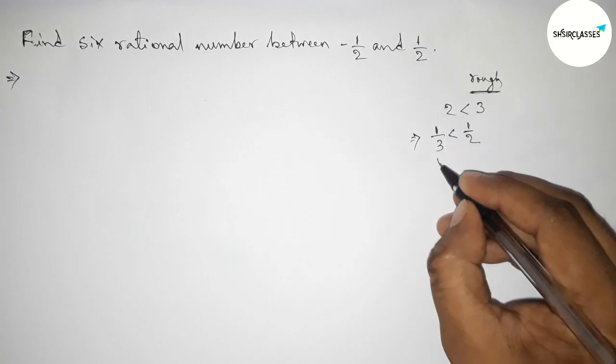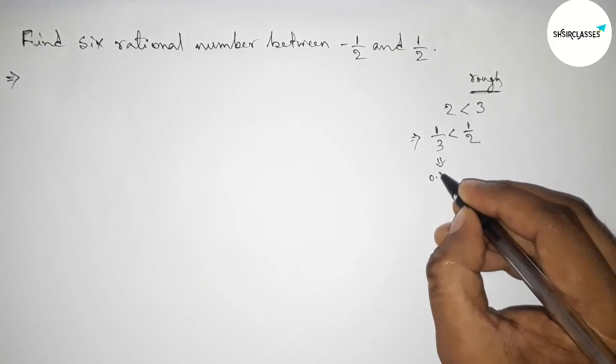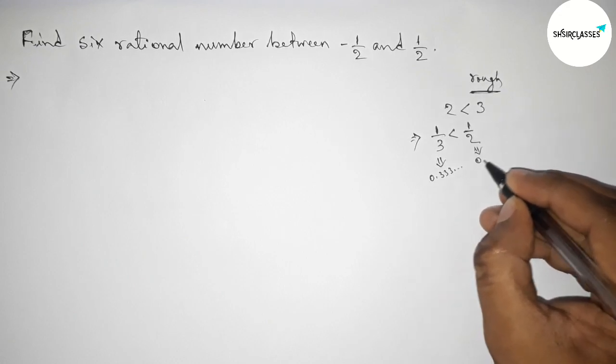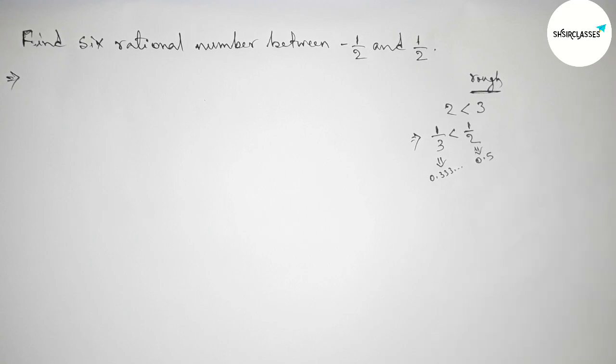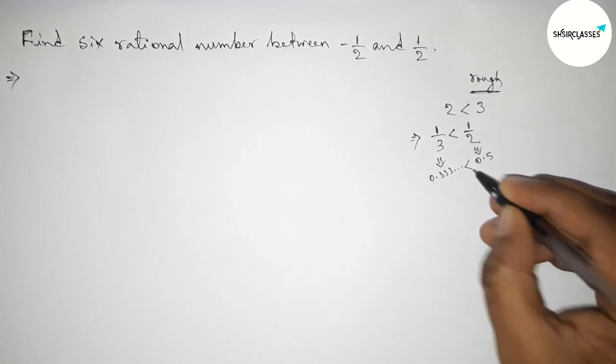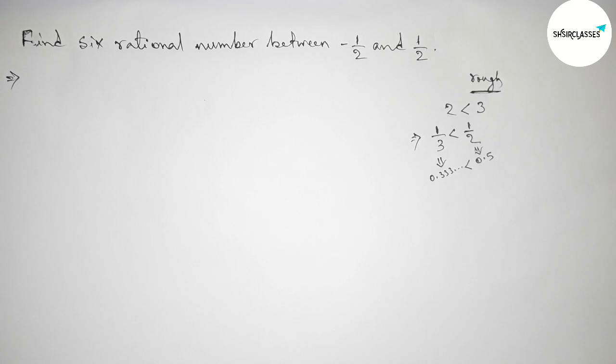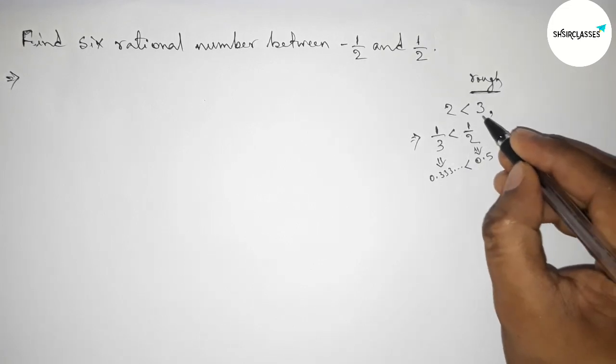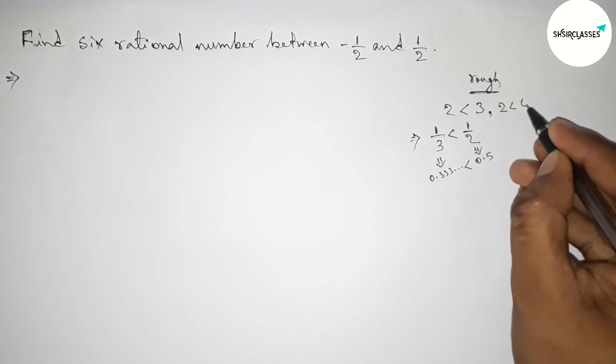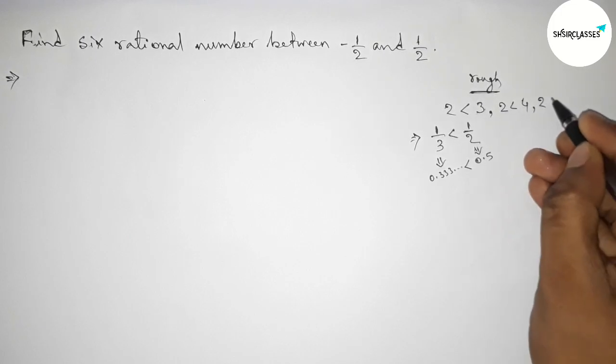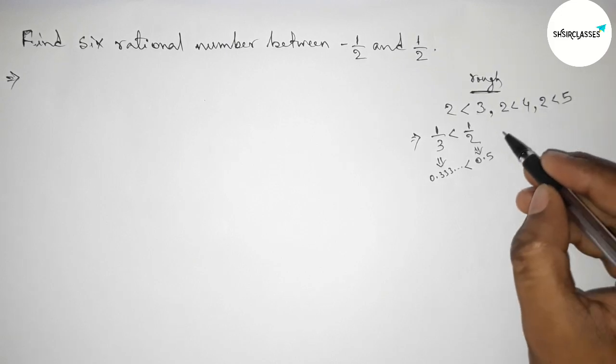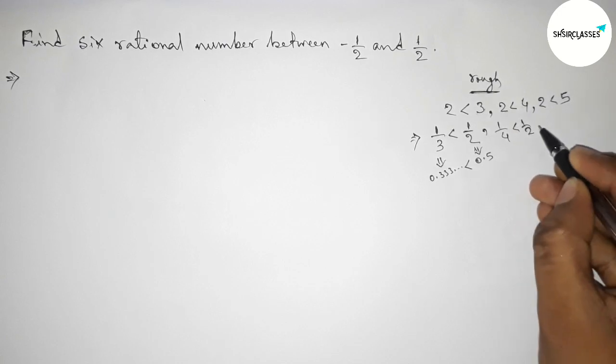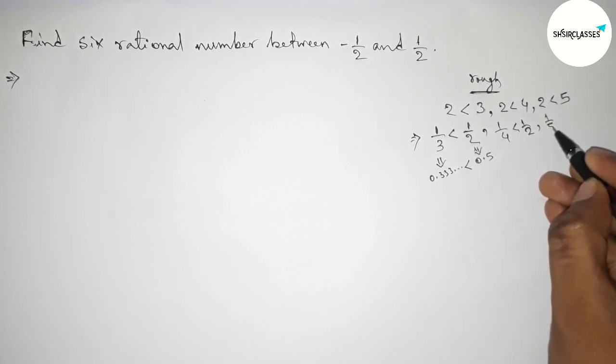Because the value of 1 by 3 is 0.333 continuous, and the value of 1 by 2 is 0.5. So here 0.5 is greater than 0.333 continuous. Now similarly taking another number 4 and another number 5, both are greater than 2. So by similar way, 1 by 4 less than 1 by 2, and 1 by 5 less than 1 by 2.